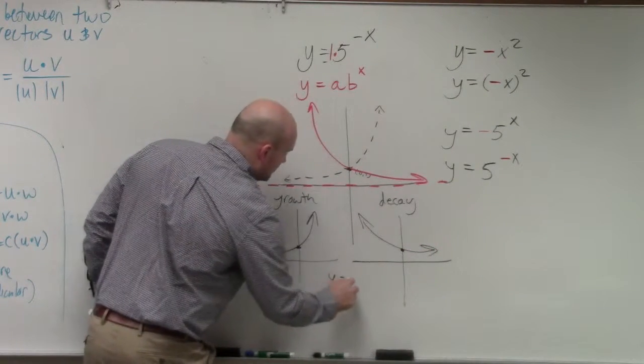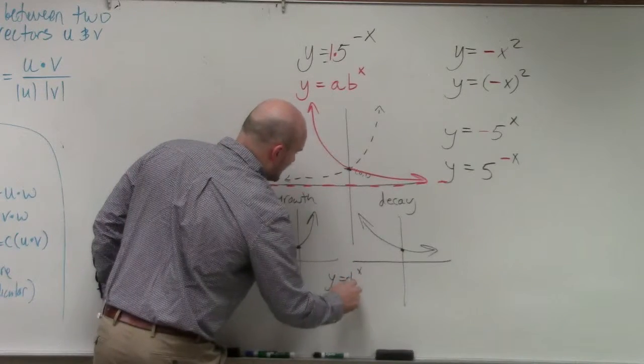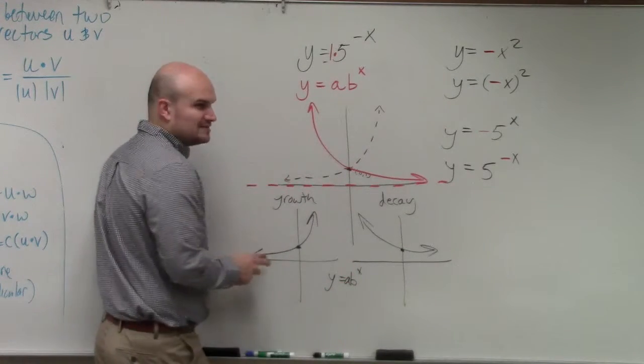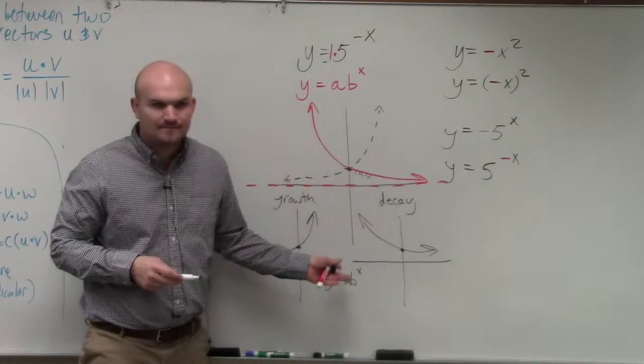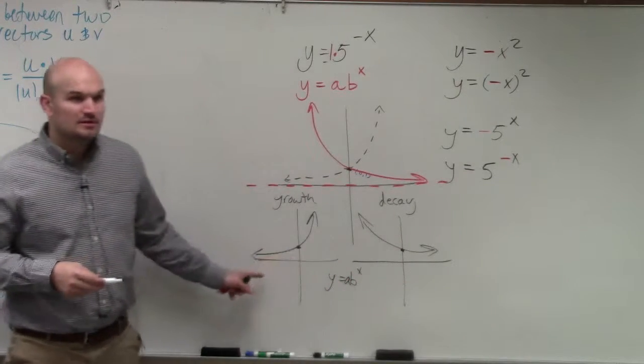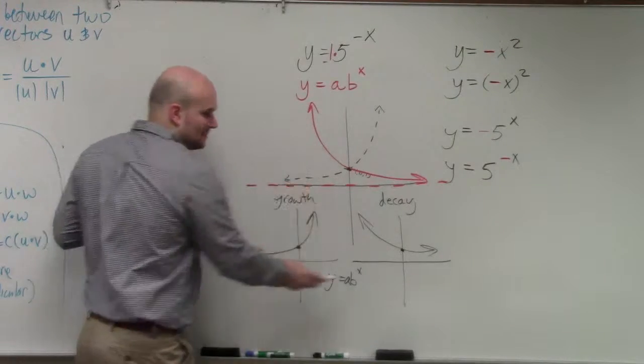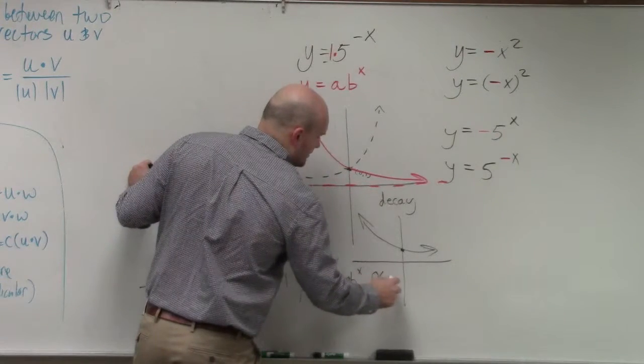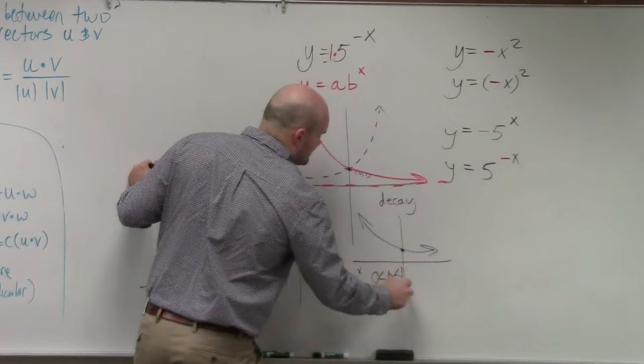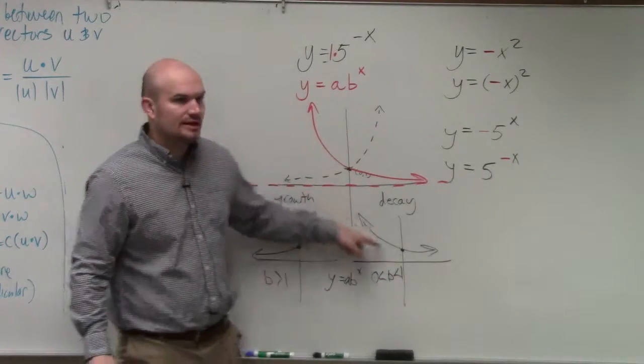Decay graph, growth graph looked like this. Decay graph looked like this. And what the difference was, they were both y equals b to the x, or a times b to the x. Do you remember the difference on how we determined if it was growth or decay? Does anybody remember? b, right. So when b is greater than 1, it looks like this. When b is greater than 0 but less than 1, it goes in that format.